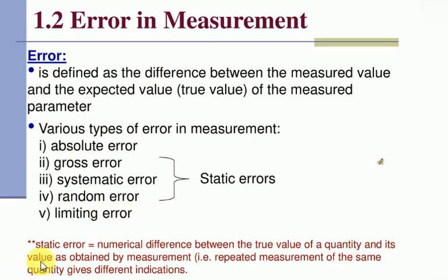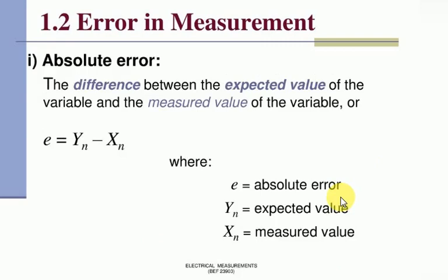Static error is the numerical difference between the true value of quantity and its value as obtained by measurement. Repeated measurement of the same quantity gives different indication. Absolute error is the difference between expected value of the variable and the measured value of the variable.